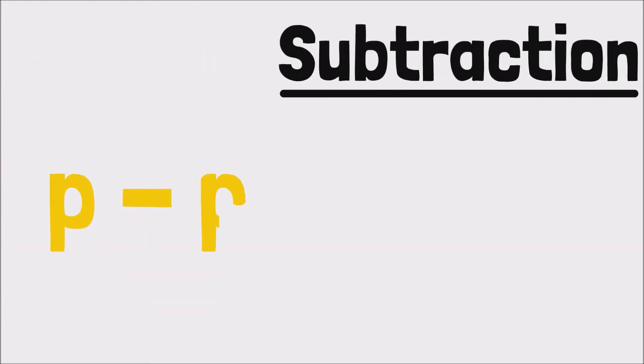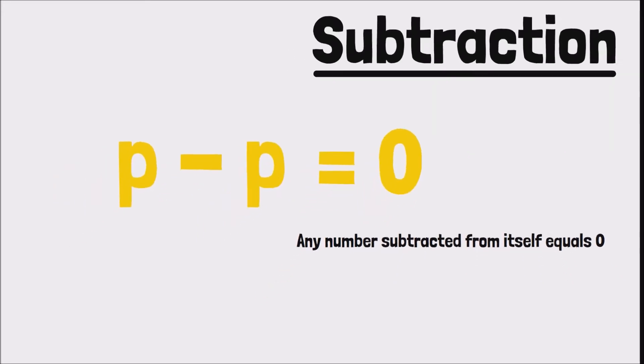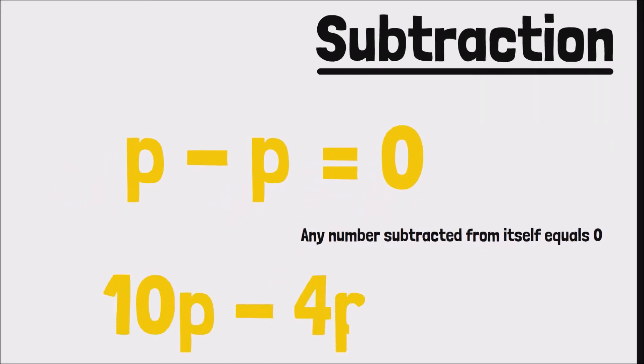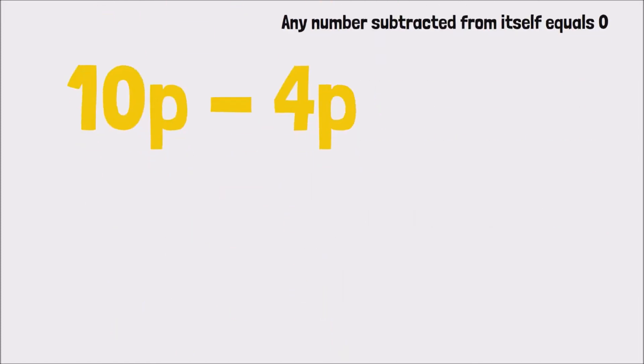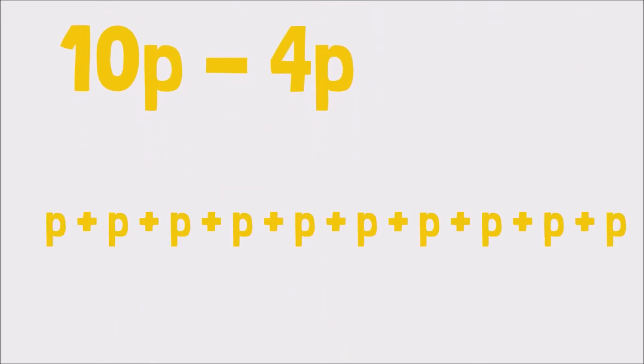Now on to subtraction. First of all, P minus P is going to be equal to zero, because if we subtract any number from itself the answer is always zero. But how about different groups, like for example 10P minus 4P? This works similarly to addition, meaning it can always be simplified by subtracting the known numbers. If we have 10 groups of pineapples and subtract four groups from it, we would be left with six groups, so we say 6P.